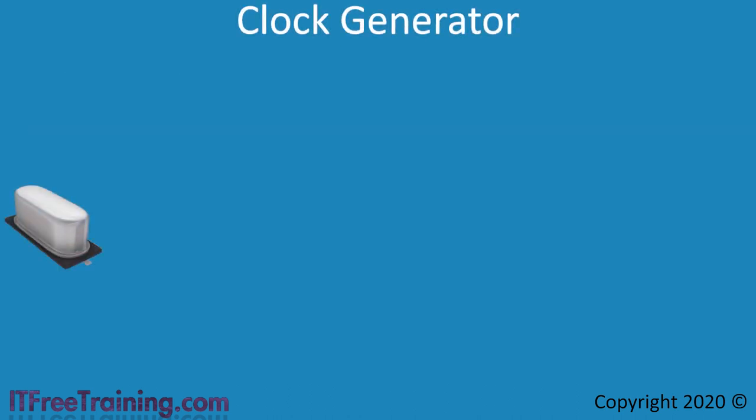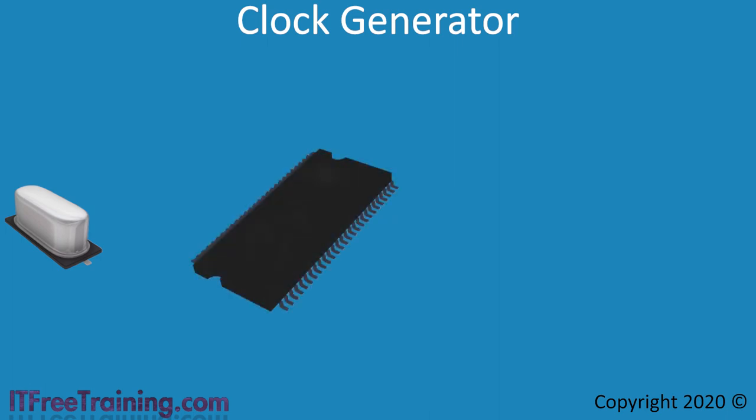The crystal in your computer generates a signal. This signal goes to a chip on the motherboard which uses the signal from the crystal to create other frequencies. It is beyond the scope of this video to go into too much detail about how this is done and there are a number of different methods, but one method is to look at the rise and fall of the signal.